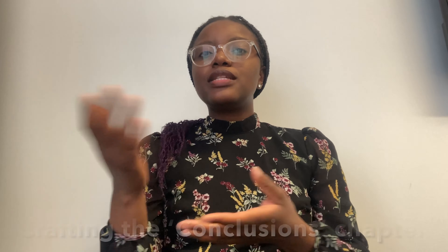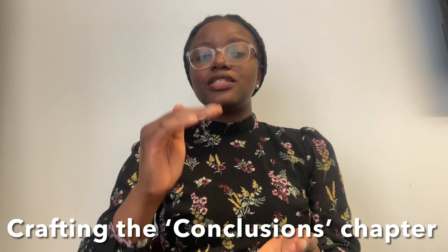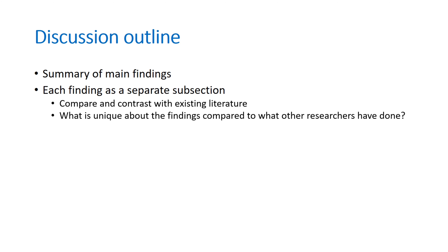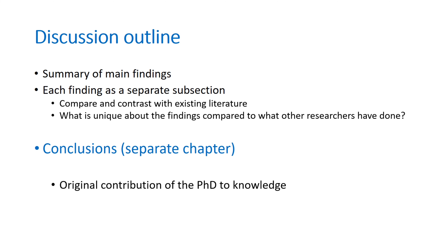After you do that across different subsections — taking each finding and comparing and contrasting to literature — you could end with an overall summary of the chapter. Some people may include a conclusion section within the discussion chapter, or have conclusions as a separate chapter. In the conclusion section, at the beginning you want to have a statement that highlights the original contribution of your PhD thesis to knowledge.